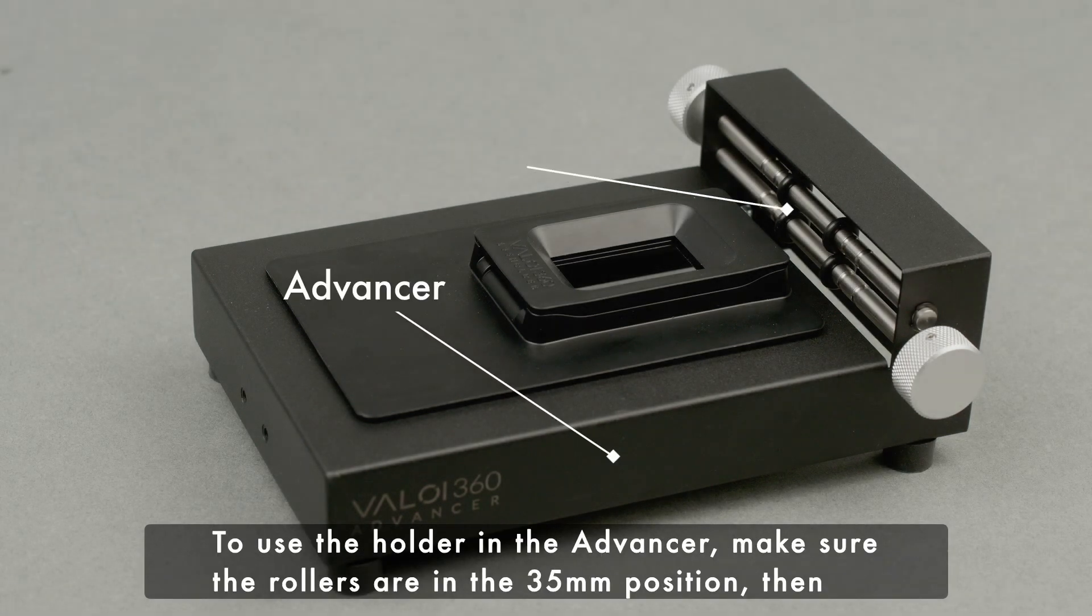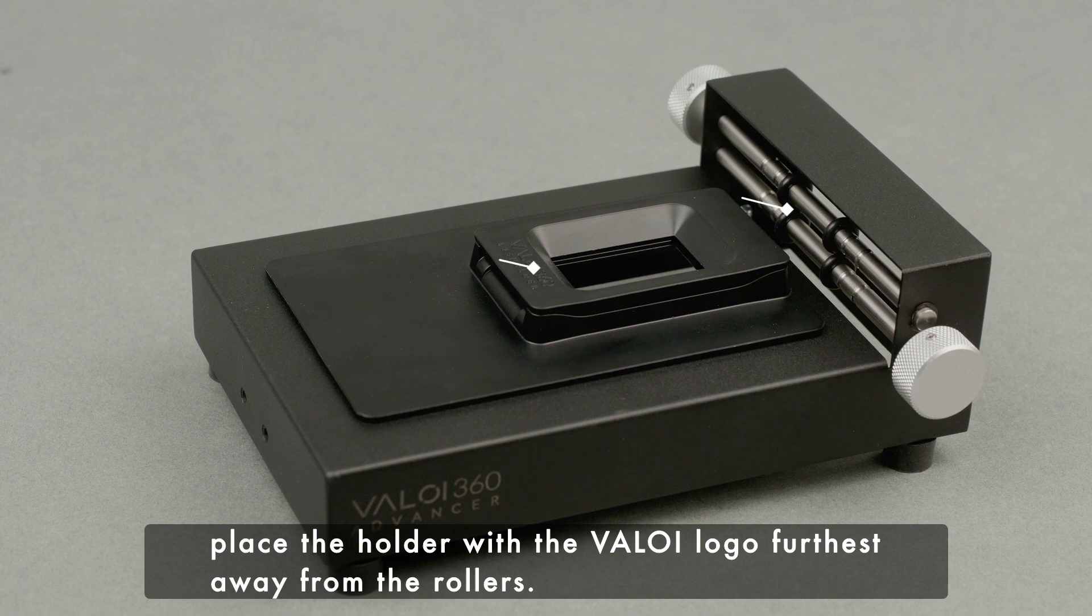To use the holder in the Advancer, make sure the rollers are in the 35mm position. Then place the holder with the Valoy logo furthest away from the rollers.